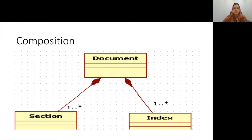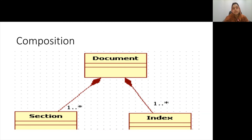Composition also implies a whole-part structure between two classes, but with coincident lifetime. This means that when the whole end of the association is created, the part components are also created — so when a document is created, the section and index are created as well. When the whole is deleted, the parts are deleted too. In composition, a part class cannot exist without the whole. The major difference is that in aggregation the parts may exist without the whole, but in composition the parts cannot exist without the whole.